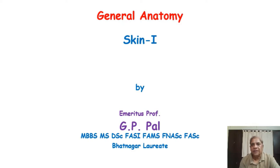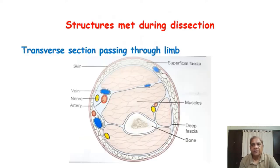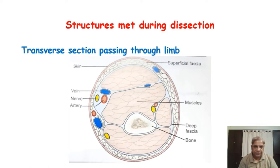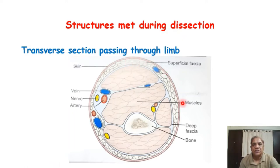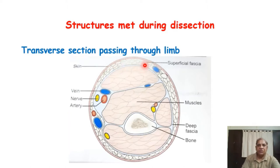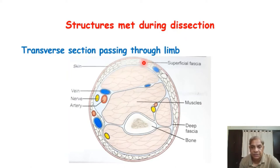This slide shows a transverse section passing through the limb — either upper or lower limb. In this section, the superficial structure covering the limb is the skin. Deep to the skin is a fibro-fatty tissue layer filled with fat and loose areolar tissue, and this is called the superficial fascia.